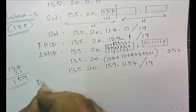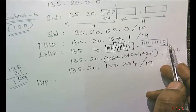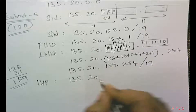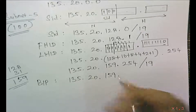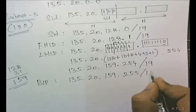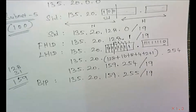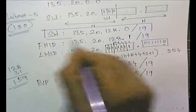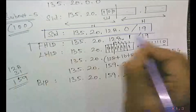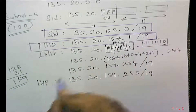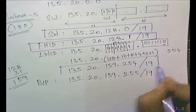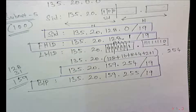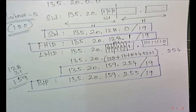The broadcast IP address for subnet 5: make everything 1 in the host part, including the last bit. This gives 135.20.159.255/19. So for subnet 5: subnet ID is 135.20.128.0/19, first host ID is 135.20.128.1/19, last host ID is 135.20.159.254, and broadcast IP address is 135.20.159.255/19. You can proceed the same way for all remaining subnets.